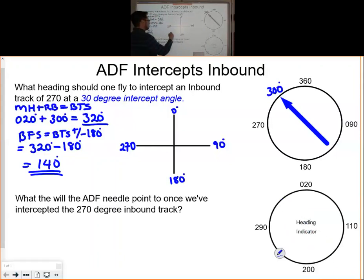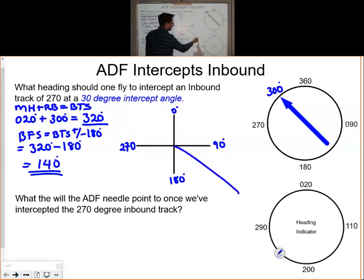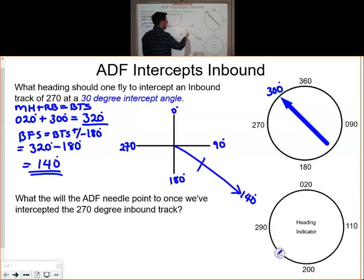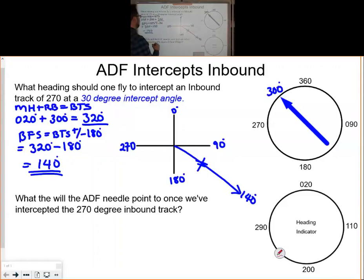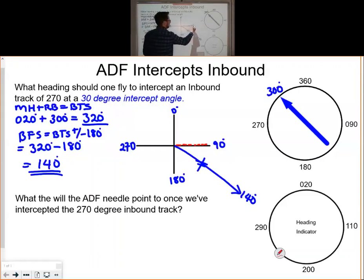Our bearing from the station is 140 degrees, so we're located to the southeast somewhere on a heading of 020 degrees. The question is asking us to intercept an inbound track of 270 degrees at a 30 degree intercept angle, so an inbound track of 270 is over here.